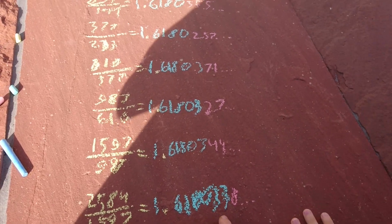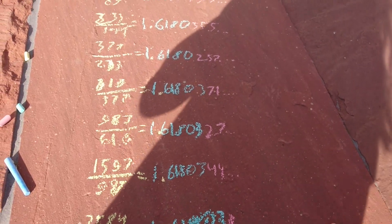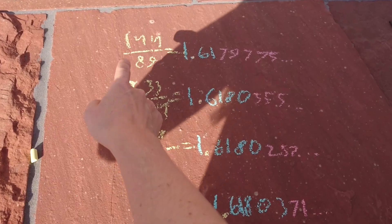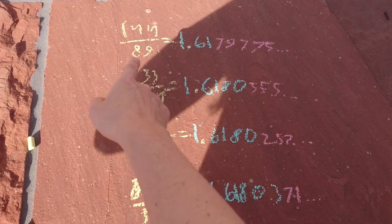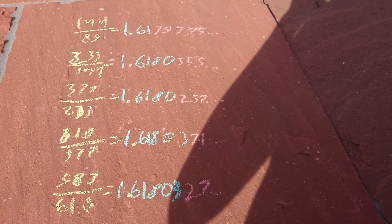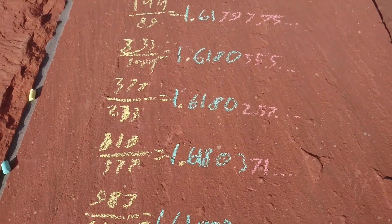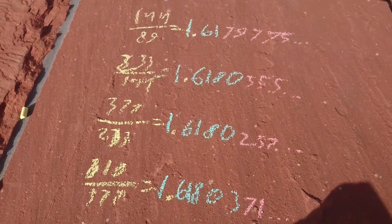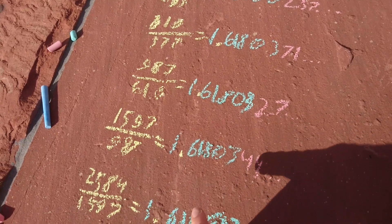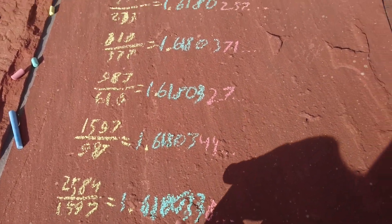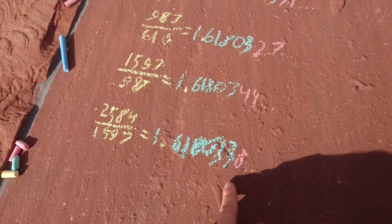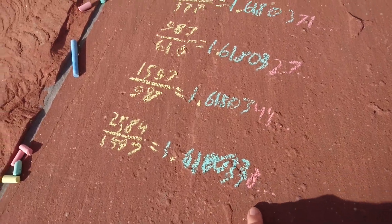Here is Simon dividing one Fibonacci number by the previous Fibonacci number. He's probably standing here to avoid my shadow, and he's getting closer and closer and closer to phi. More and more accuracy.